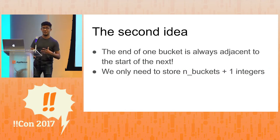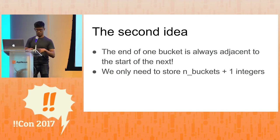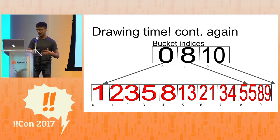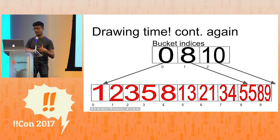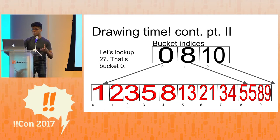Around this time we had our second idea, and this one is going to blow your mind. The end of one bucket is always right next to the start of the next — at the end of the A part of the phone book is the B part. So we don't need to store the start and the end; we can just store the start of each bucket, which halves our memory usage and sort of doubles our cache efficiency. The upper smaller array tells you where each bucket starts and ends. The first bucket starts at index 0 and ends at index 8; the second bucket starts at index 8, ends at index 10, which isn't a real index — it just works if you don't read past the end of the array.